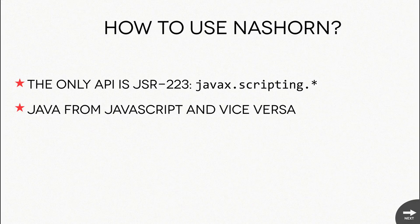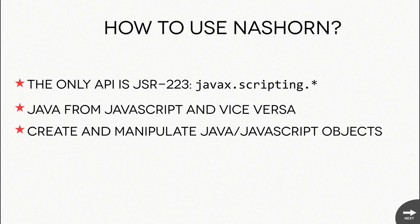Thanks to the API, you can easily pass objects between Java and JavaScript. You can inject your Java objects into your JavaScript, read data from JavaScript code, and so on. I'll show some code later. From the JavaScript perspective, inside your JavaScript code you can use not only available JavaScript libraries but also full JDK classes. For example, if you want to use JDBC inside JavaScript, you can load the JDBC driver from your JavaScript code.